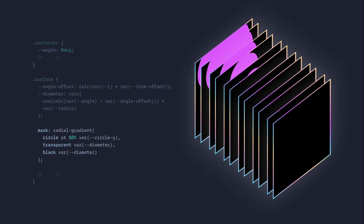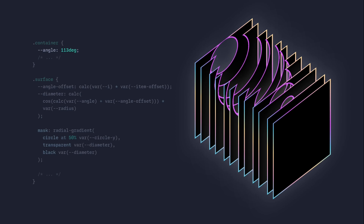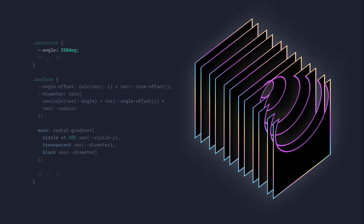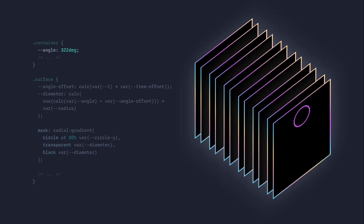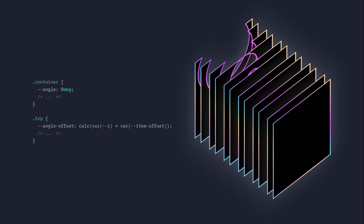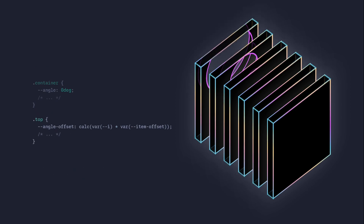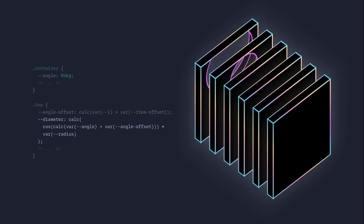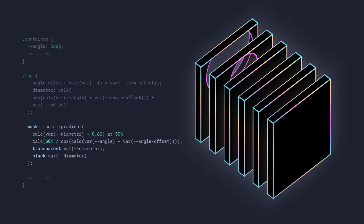The only thing left to do is to use a mask to punch a hole through our background. We can also calculate the angle offset for the top. Now that we have the angle offset and the diameter, we can use it inside our mask — using some basic math to punch a hole through the top element.